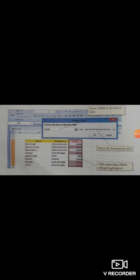After that we click on OK button. As we click on OK button, all the cells that have a value more than 20,000 are highlighted with light red color.